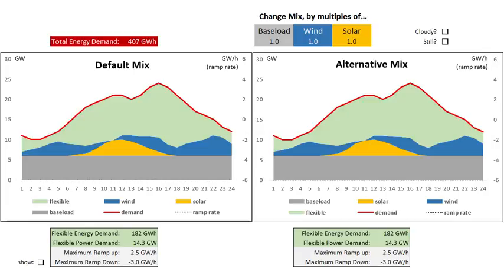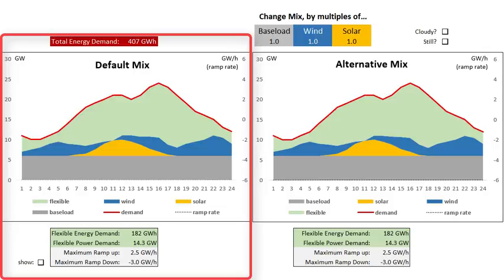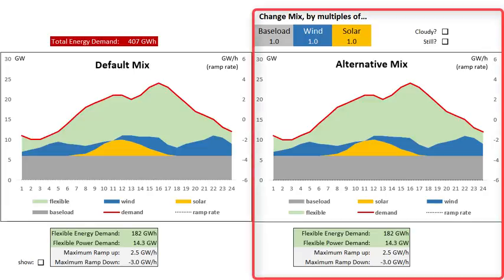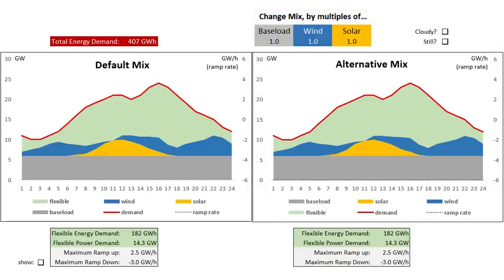This quick video is just going to reiterate some of the lessons from the article. You'll recognize the charts from the screenshots in that same article. There are two charts here side by side. On the left I've got what I've called a default mix, which we're not going to vary. And then what we are going to do is change what I've called the alternative mix, which is the one on the right, so that we can compare the two if we make changes between different renewables and baseload and flexible power generating sources.